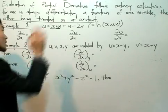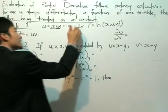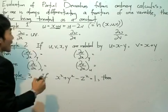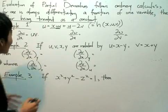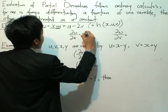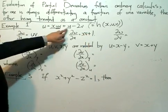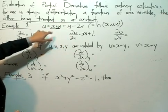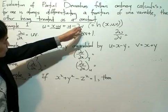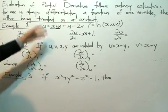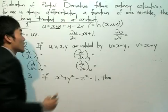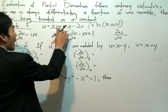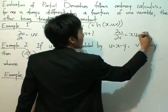Moving along, I can do the same for the other two variables. Partially differentiating w with respect to u: I have a u here and a u here. Treating x and v as constants, I get xv plus one — the constant in front of u is one, so differentiating gives one, and xv is the other constant term. The 2v term is also a constant with respect to u, so it gives zero. Finally, partially differentiating w with respect to v gives xu minus 2, since the minus 2v term differentiates to minus 2.